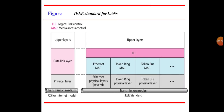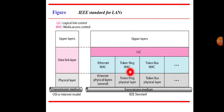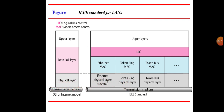This diagram represents the IEEE standard for local area networks. It shows the Logical Link Control (LLC) and Media Access Control (MAC) sublayers within the data link layer, along with upper layers. The physical layer includes the Ethernet physical layer, Token Ring physical layer, and Token Bus physical layer. Below that is the transmission medium, corresponding to the IEEE standard and the OSI or Internet model.